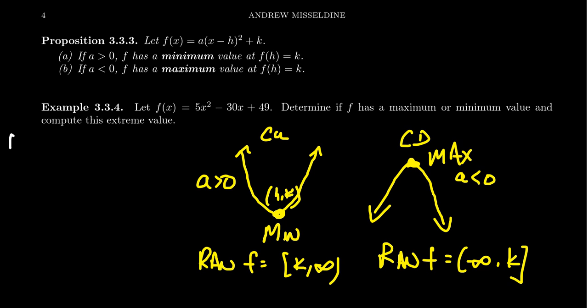So in doing so, we're going to get f(x) equals—factor out the coefficient from the x's. So you take away the 5, that leaves behind x² - 6x, leave a space, plus 49.